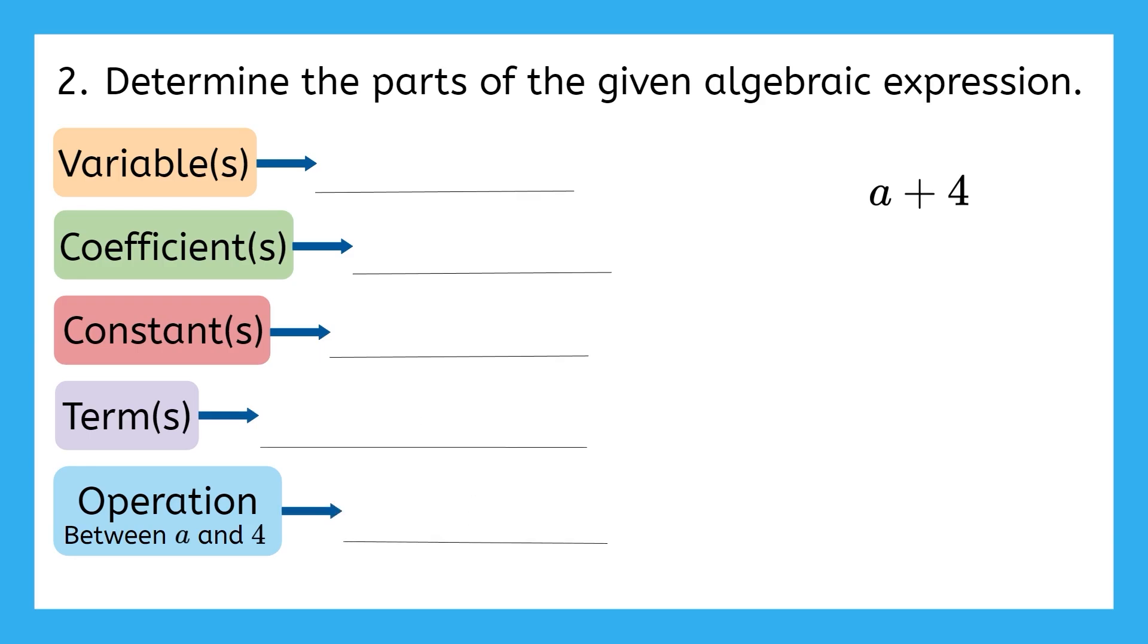Let's check our work starting from the top. What is the variable in this expression? The variable, or the letter that's used to represent an unknown number, is a. How about coefficients? So a coefficient is the number that's being multiplied by our variable. The only thing is that there's no number in front of our variable a. So what is the coefficient?